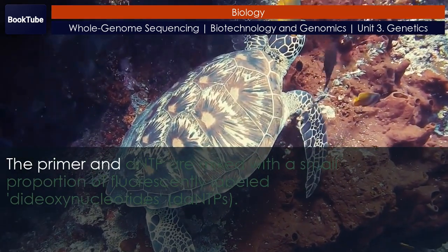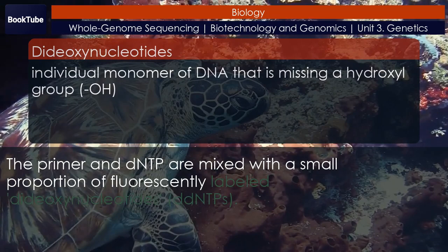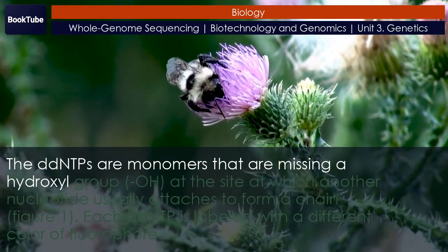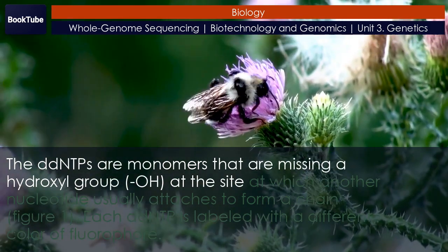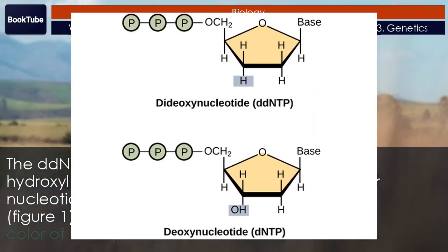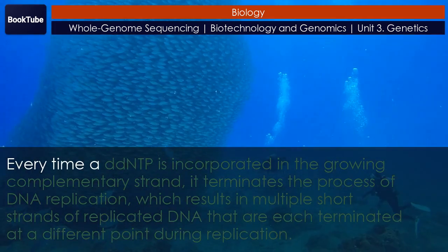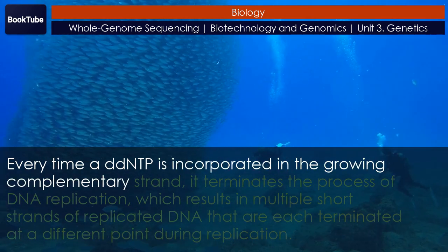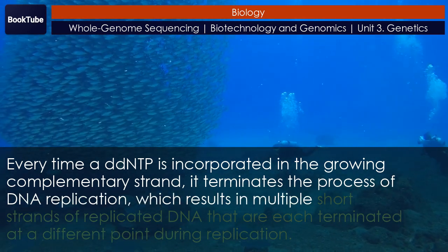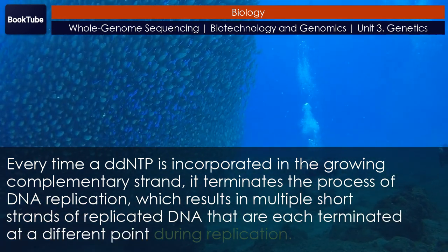The primer and dNTPs are mixed with a small proportion of fluorescently labeled dideoxyneucleotides (ddNTPs). The ddNTPs are monomers that are missing a hydroxyl group at the site at which another nucleotide usually attaches to form a chain. Each ddNTP is labeled with a different color of fluorophore. Every time a ddNTP is incorporated in the growing complementary strand, it terminates the process of DNA replication, which results in multiple short strands of replicated DNA that are each terminated at a different point during replication.